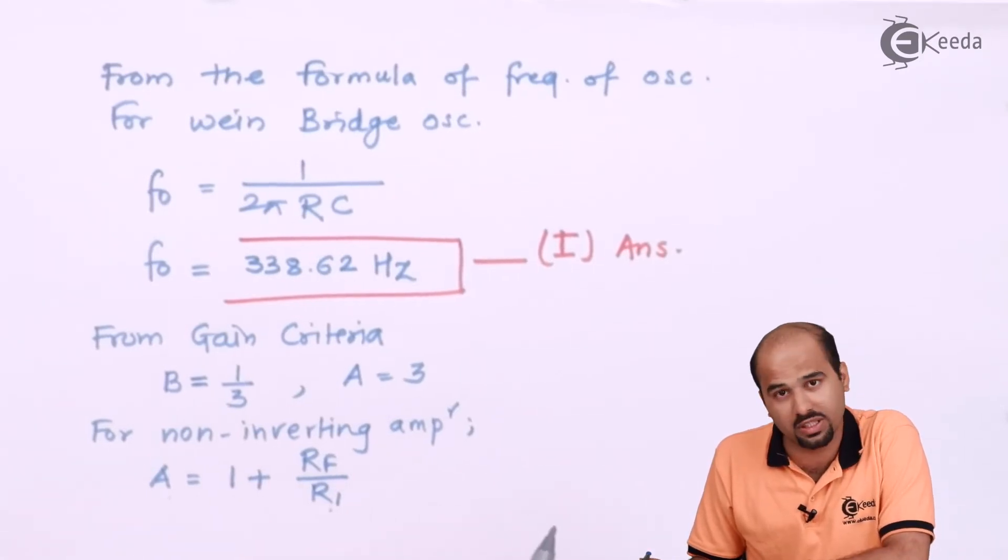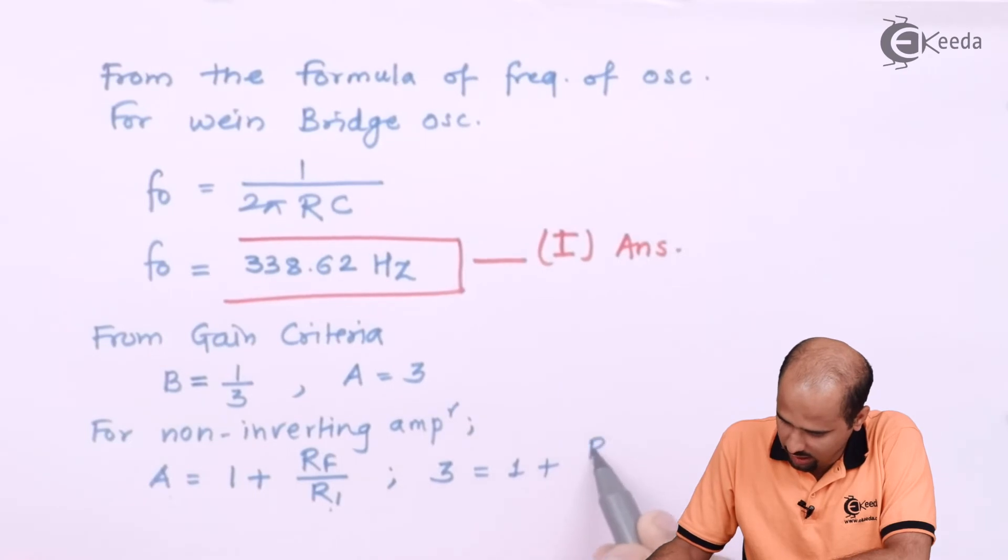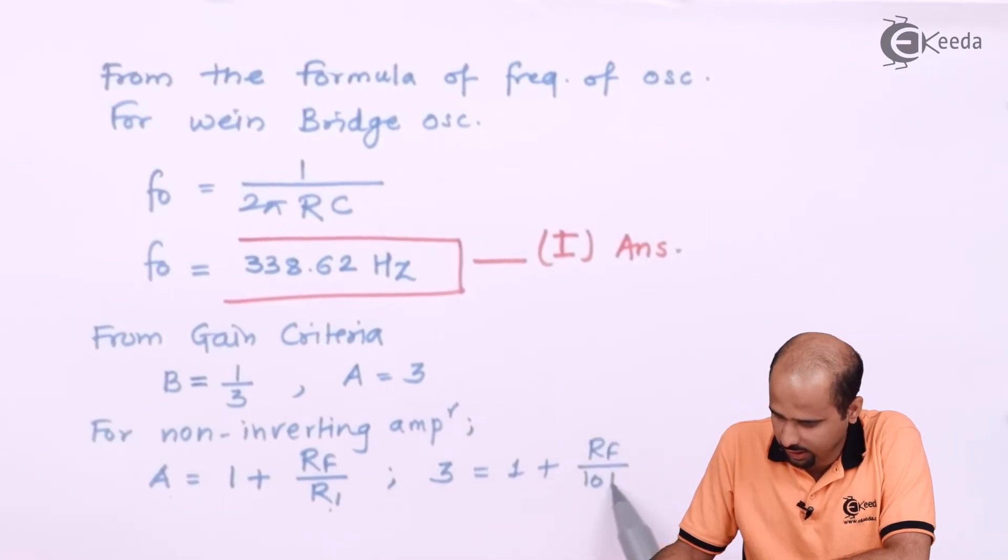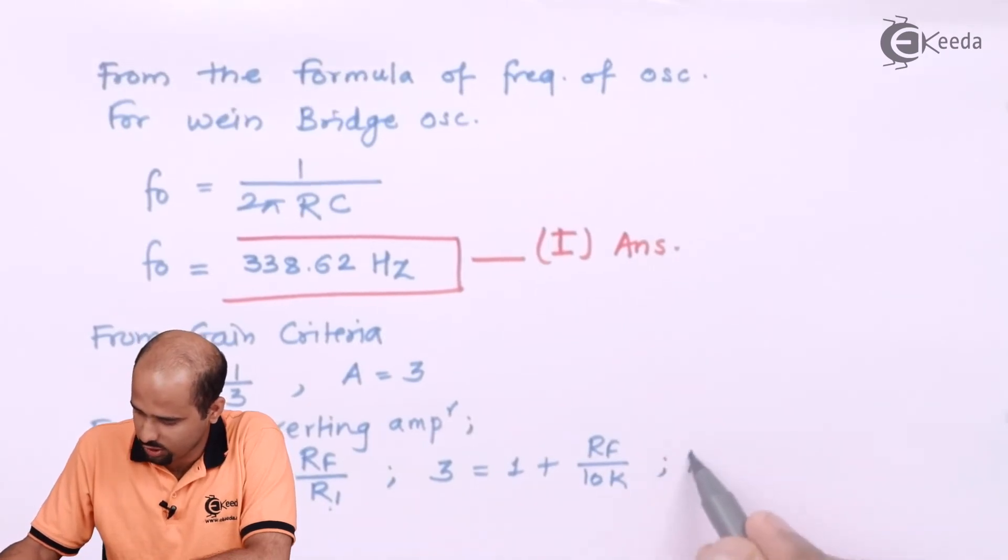So I can say what should be the value of RF, just will have to put the value. We will say that 3 is equal to 1 plus RF divided by 10k. So from here we will be getting RF is equal to 20k.